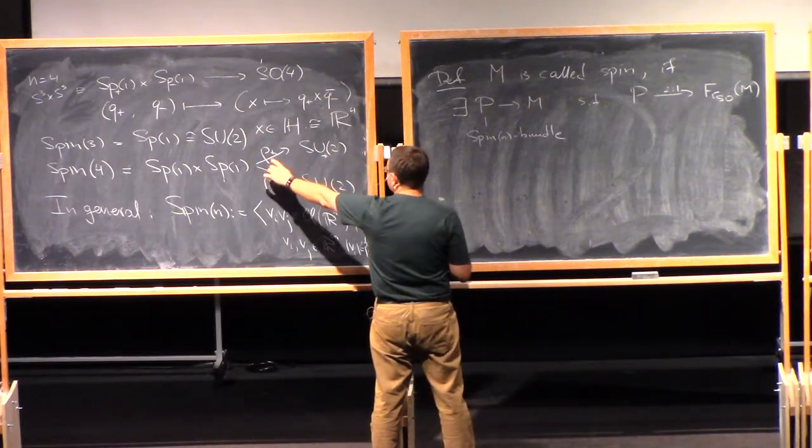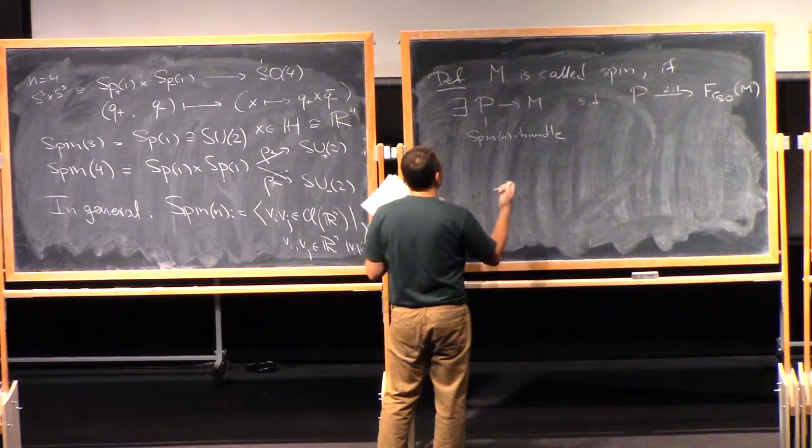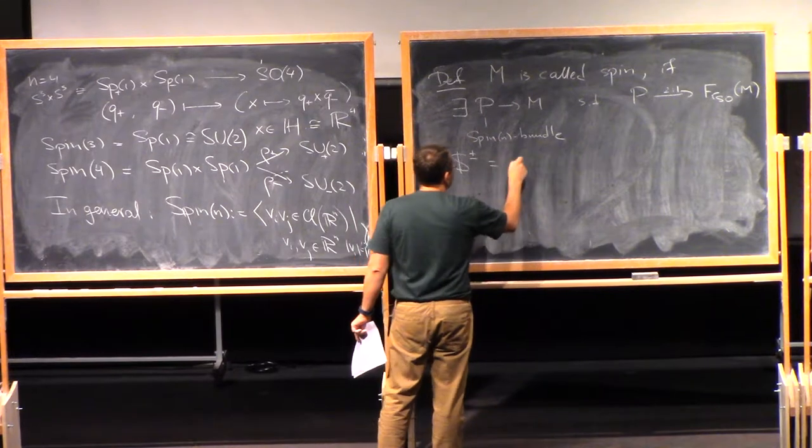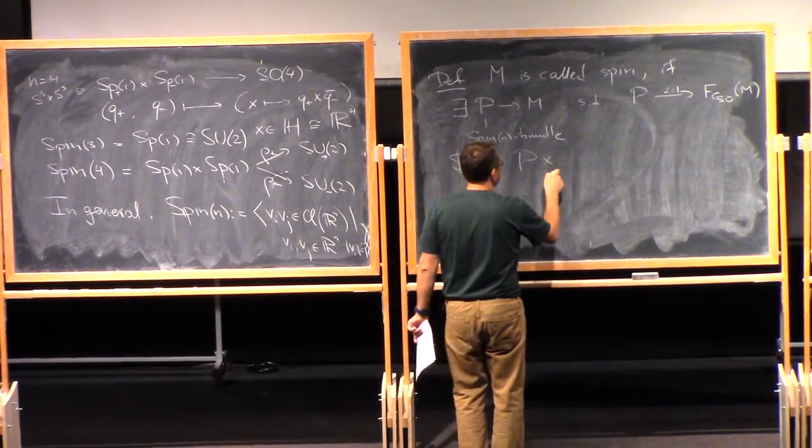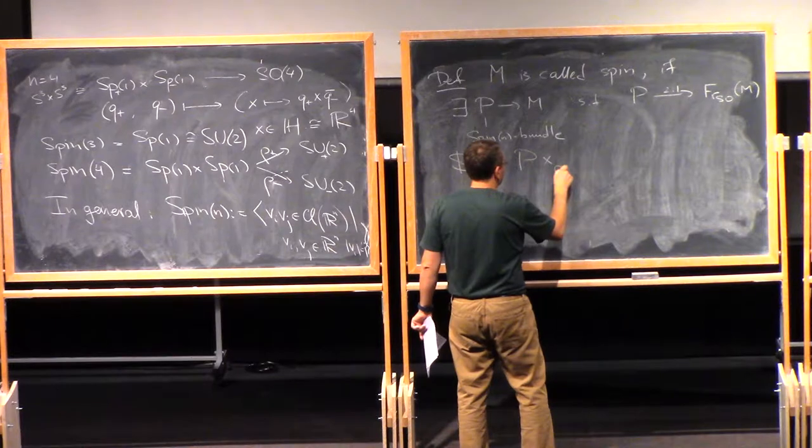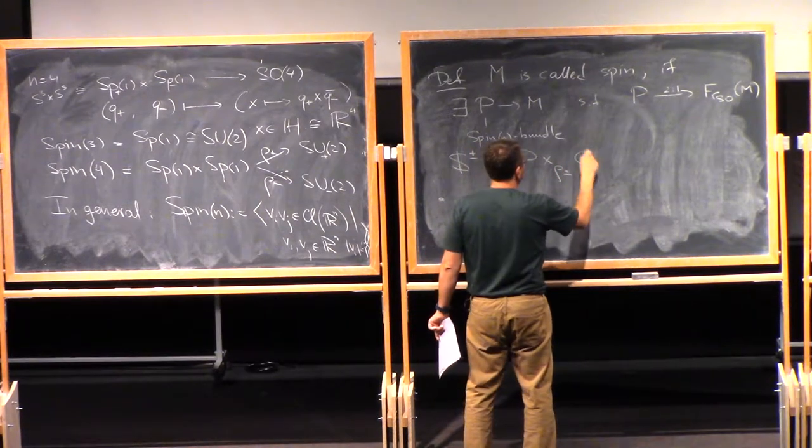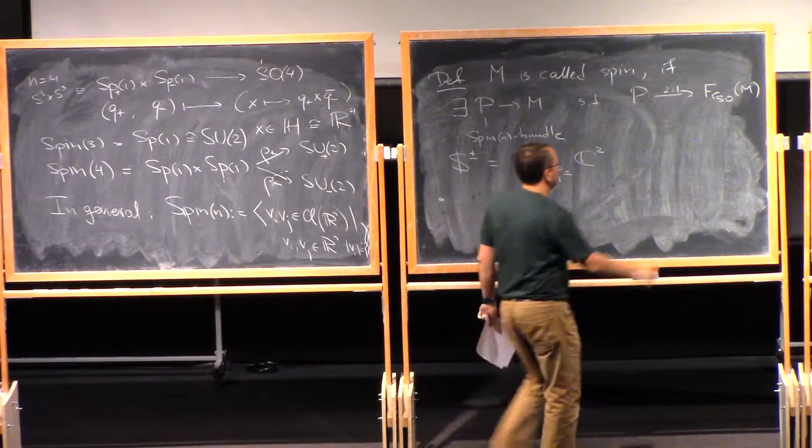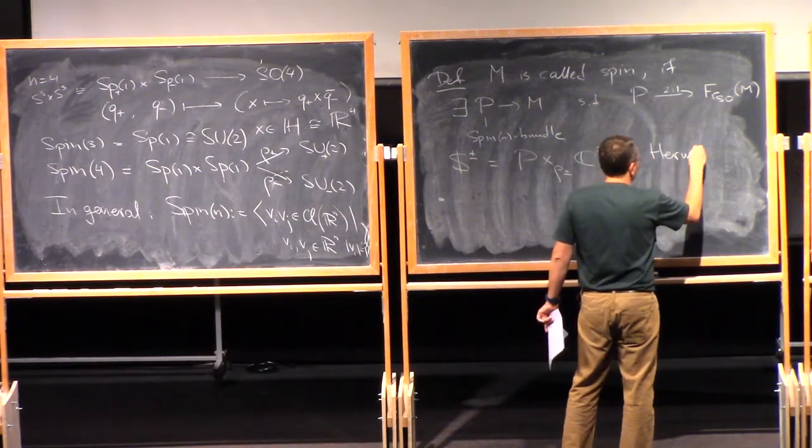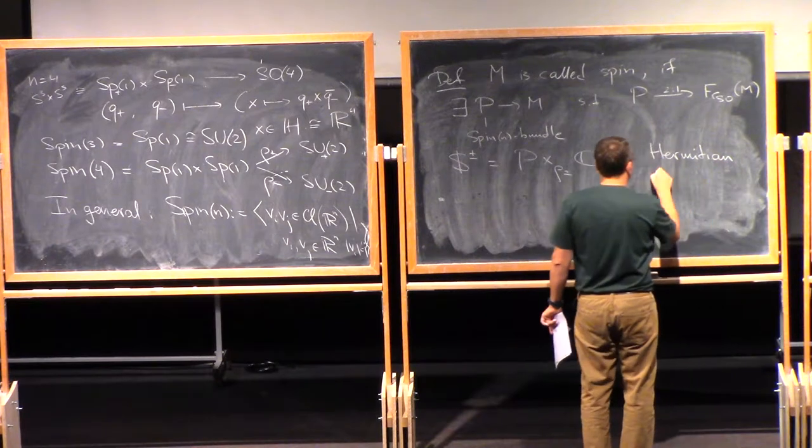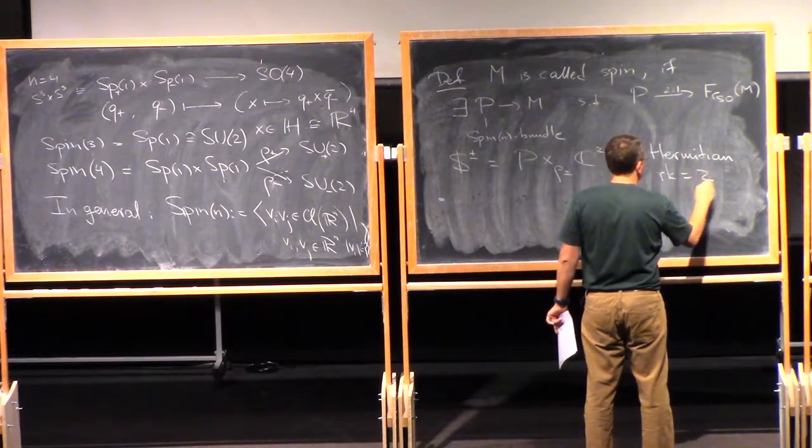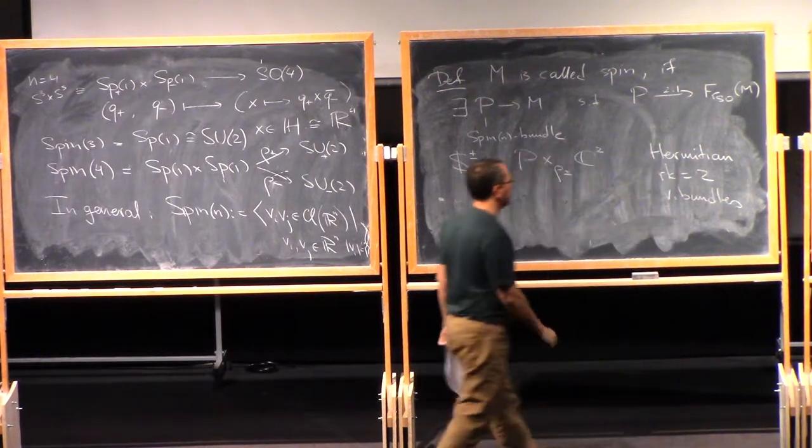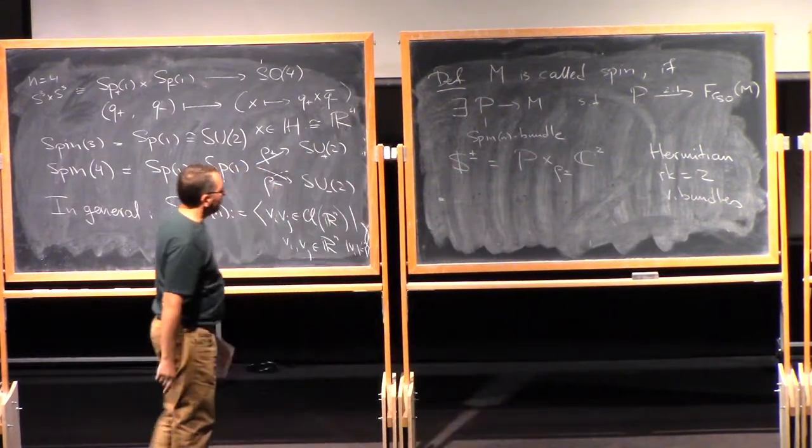Then, these two representations, rho plus and rho minus, give me two vector bundles, S plus minus. So, this is just P times rho plus minus C2. So, these are Hermitian rank 2 vector bundles. But more importantly